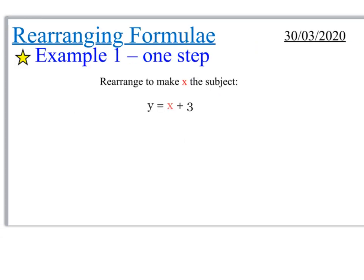So this is example one. It's a one-step question. It says rearrange to make x the subject. So we want this entire thing to say x equals. The whole point is we want to get x by itself. So currently we have y is equal to x plus 3. So we need to figure out how can we get the x all by itself. If we subtract 3 from this side, we could also subtract 3 from this side, which is very similar to solving equations. I'm going to be ending up with y minus 3 is equal to x.